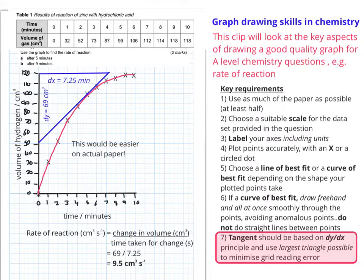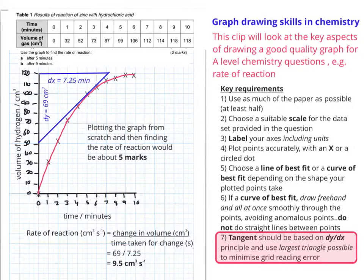The other thing to remember is that I've also drawn this on an iPad, so this curve of best fit's not going to be as good as I would have liked. Although it says two marks for the rate of reaction question at the top, you'd actually get five marks if you were asked to draw the graph from scratch and then use that to work out the rate of reaction. There's several things you'd have to bear in mind from the key requirements, so each of those might be one mark.